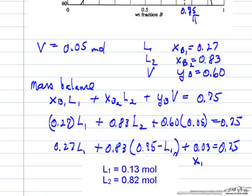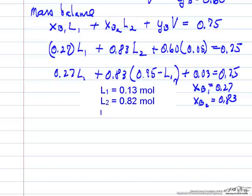The composition in liquid 1 is 0.27 mole fraction of B. In liquid 2, the mole fraction is 0.83. And of course, we have vapor as given in the problem statement, and its mole fraction is 0.6.